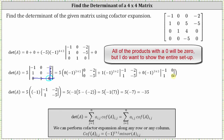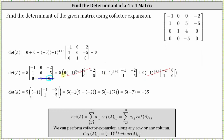Two of these three products will be zero — the first product has a factor of zero, and the third product has a factor of zero. This leaves us with five times negative one to the fifth power, which is negative one. So one times negative one is negative one, and then we have the two by two determinant. The product of the main diagonal minus the product of the minor diagonal gives us five minus negative two, which equals seven. This gives us five times negative one times seven, or five times negative seven, which is negative 35. So the value of the four by four determinant is negative 35.